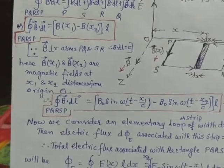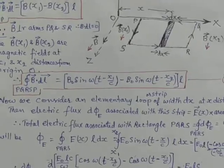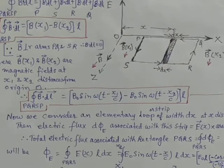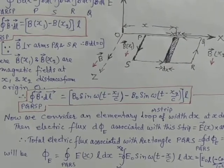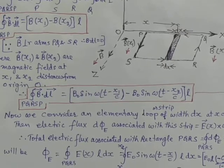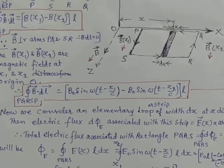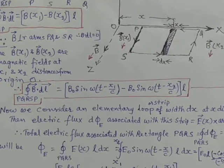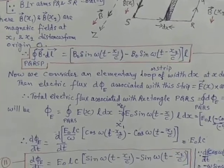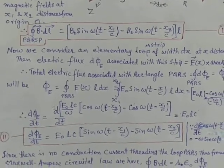Putting B_x1 equal to B₀ sin(ωt minus x1 by c) and B_x2 equal to B₀ sin(ωt minus x2 by c), this gives us the value of integral B dot DL integrated over the whole loop PQRS.